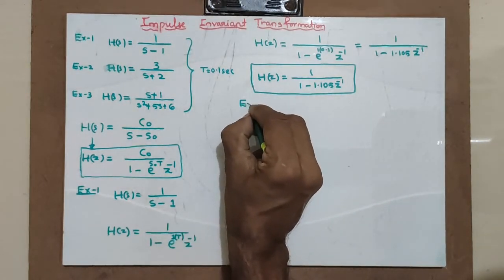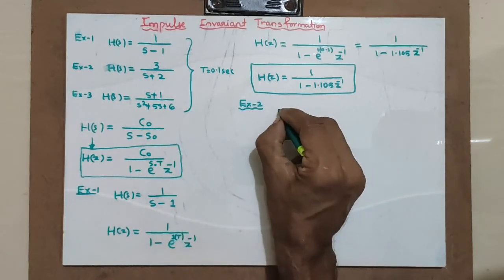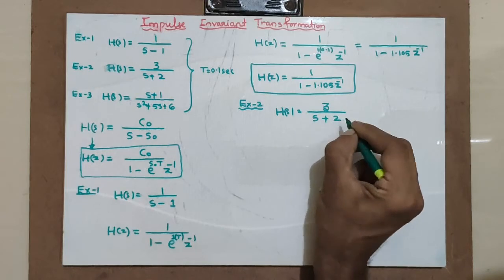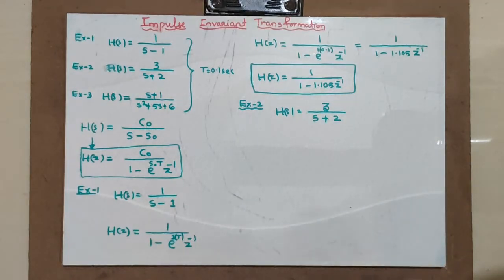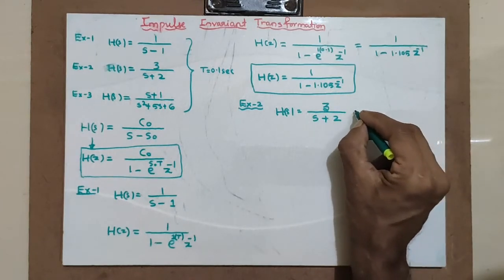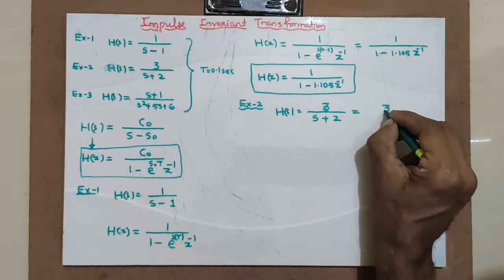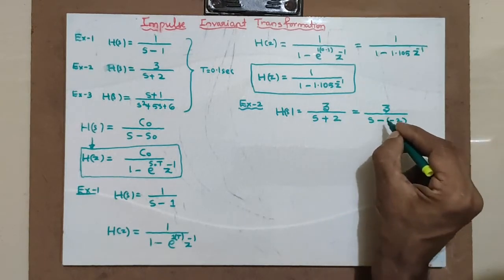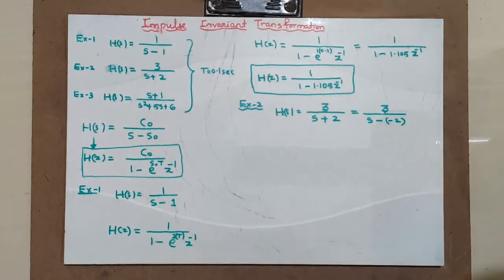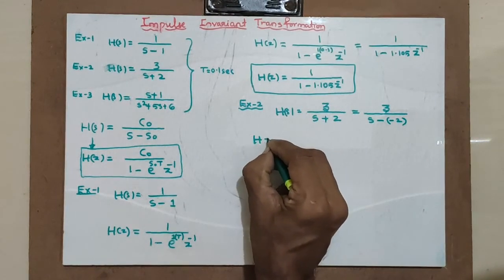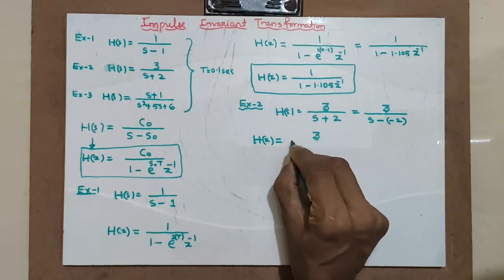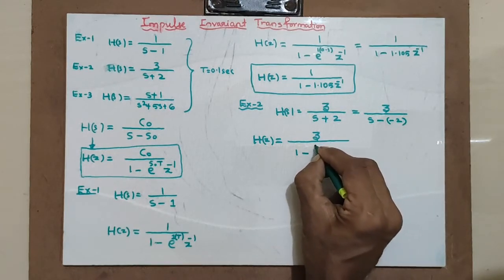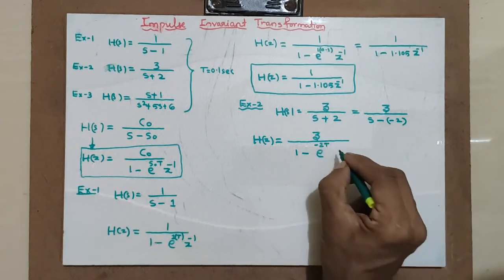Now Example 2: H(s) is given as 3 divided by (s plus 2). To write it in the standard form (s minus s₀), I note that the pole is at minus 2. So H(z) is equal to 3 divided by 1 minus e raised to (minus 2 times T) times z raised to minus 1.